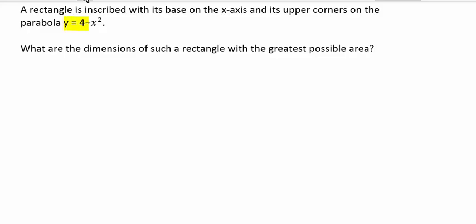In this problem we're given a quadratic equation y equals 4 minus x squared. The graph would be a parabola and we're going to inscribe a rectangle in the parabola with the base of the rectangle being on the x-axis.